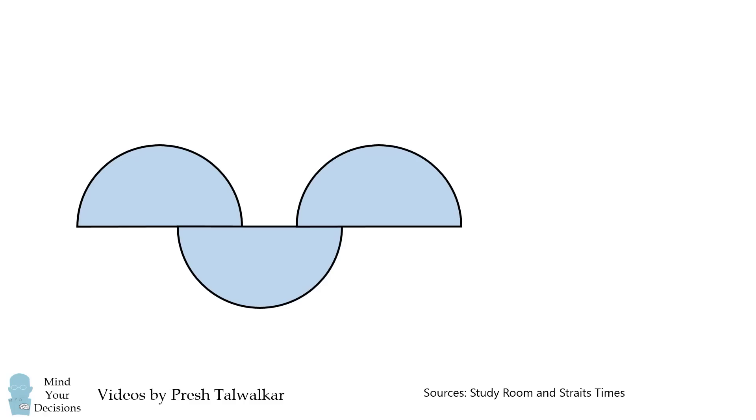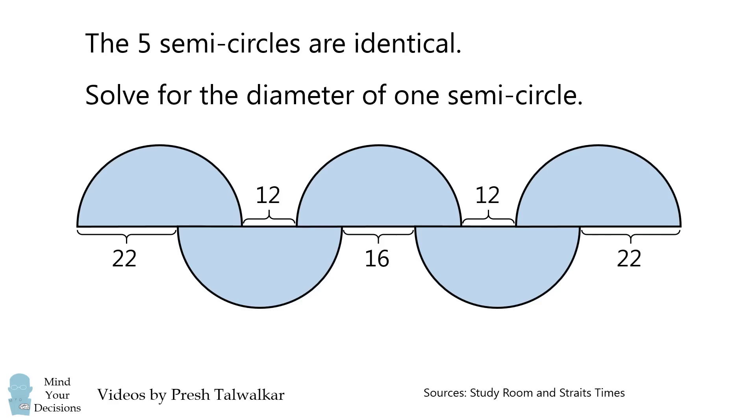Start with five semicircles that are alternatingly up and down. These are the distances between the semicircles. If all five semicircles are identical, what is the diameter of one semicircle?